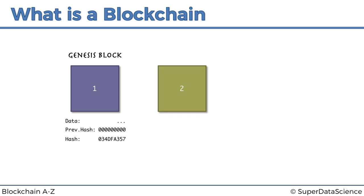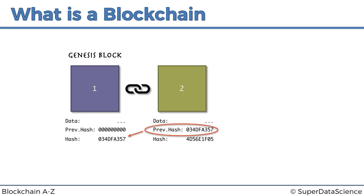Then there's block number two. Block number two also has some data, this time it does have a previous hash, and it has its own hash. As you can see, the previous hash of block number two is exactly identical to block number one's hash. And that is where the link comes — that is why a blockchain is called a chain or a blockchain, because the blocks are cryptographically linked with each other through these hashes. Every block has its own fingerprint and it also references the fingerprint of the previous block.